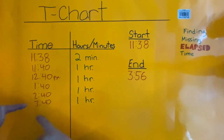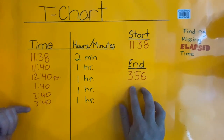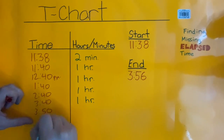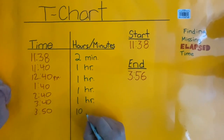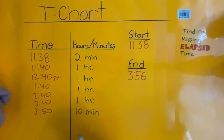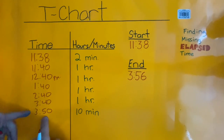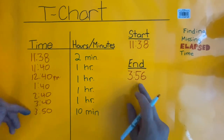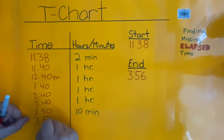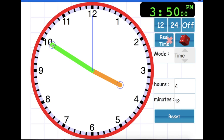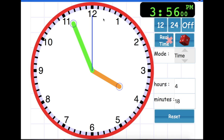Now we can start moving up our minutes again. We were at 3:40 and we need to get to 3:56. Let's find a friendly or compatible number to jump up — we'll do 10 minutes. So let's go from 3:40 to 3:50, and that is going to be 10 minutes. And then we're going to go from 3:50 to 3:56, which is going to be 6 minutes: 3:51, 3:52, 3:53, 3:54, 3:55, 3:56.